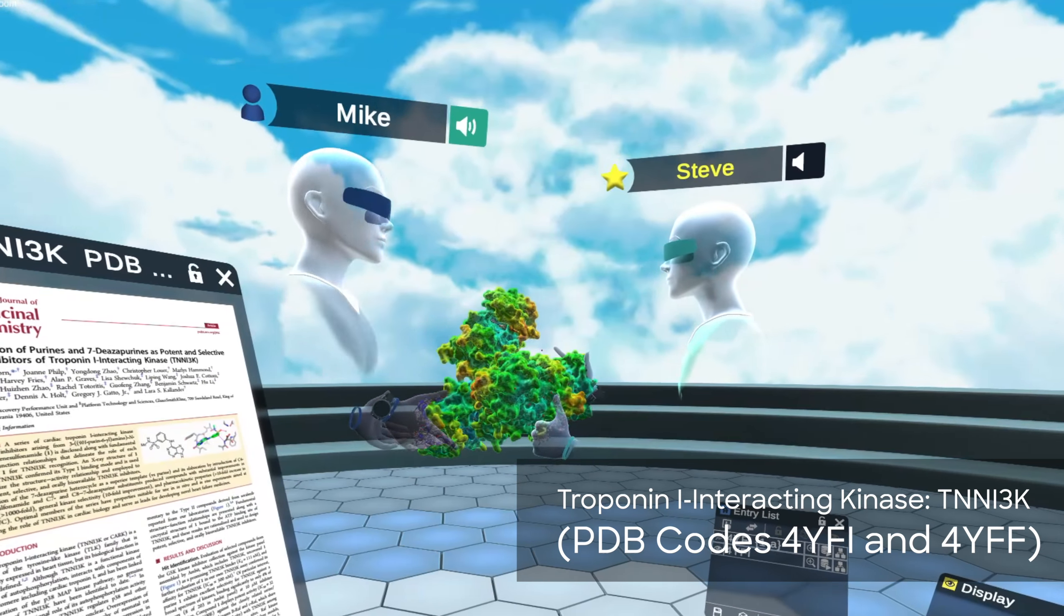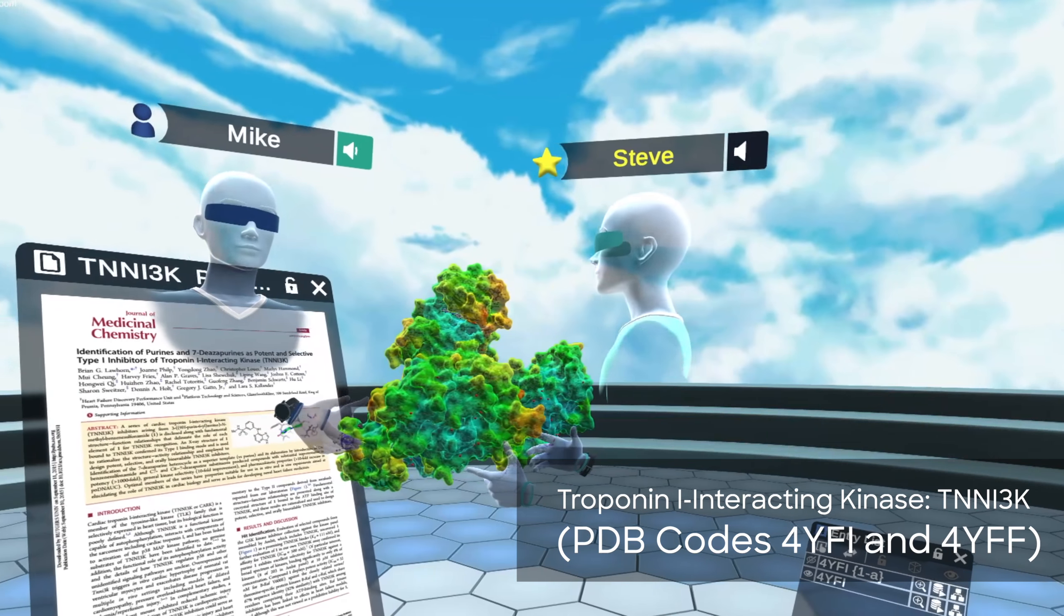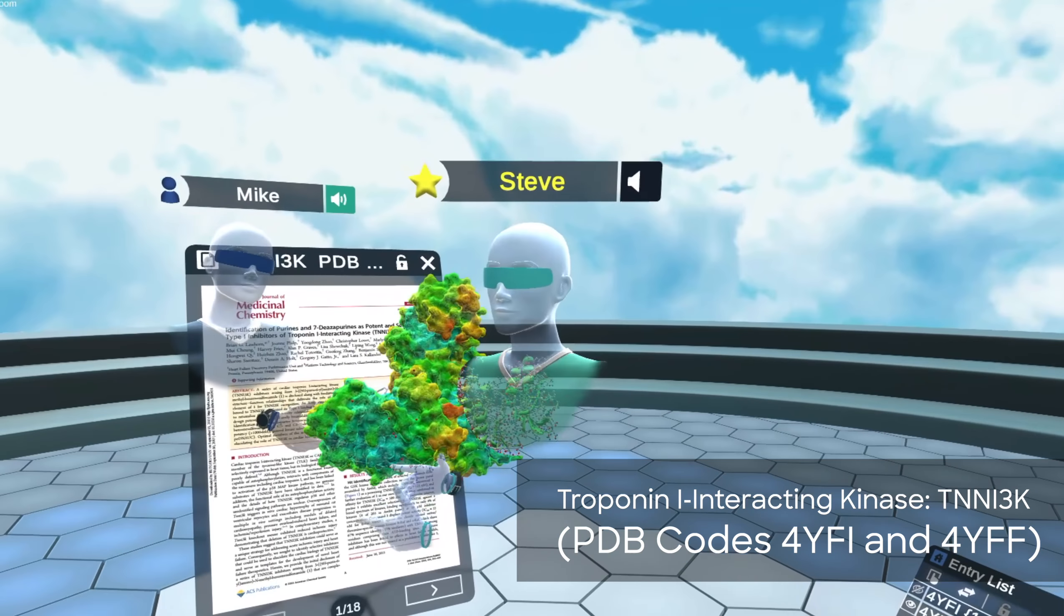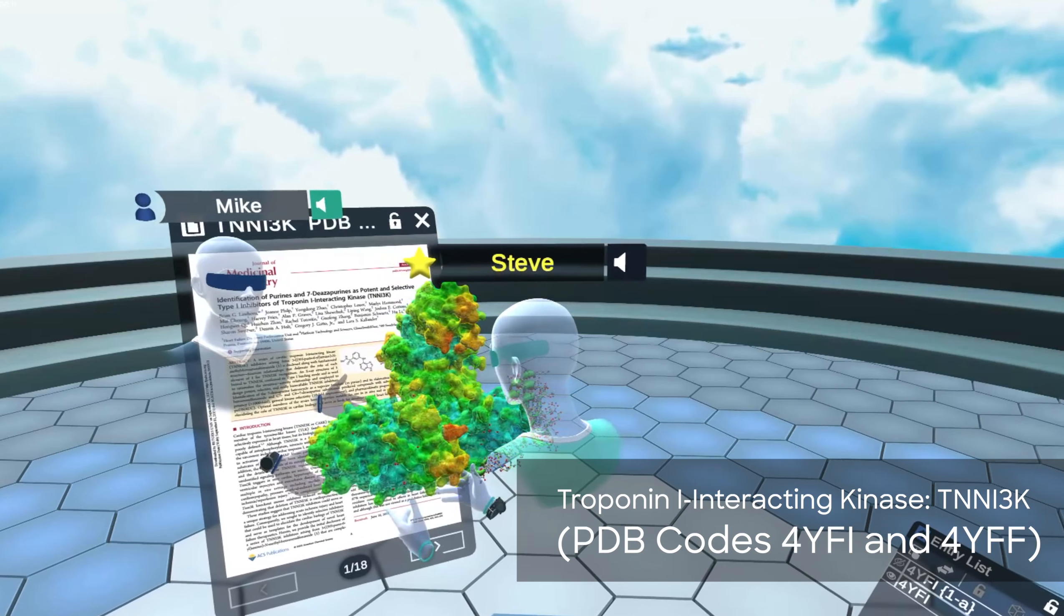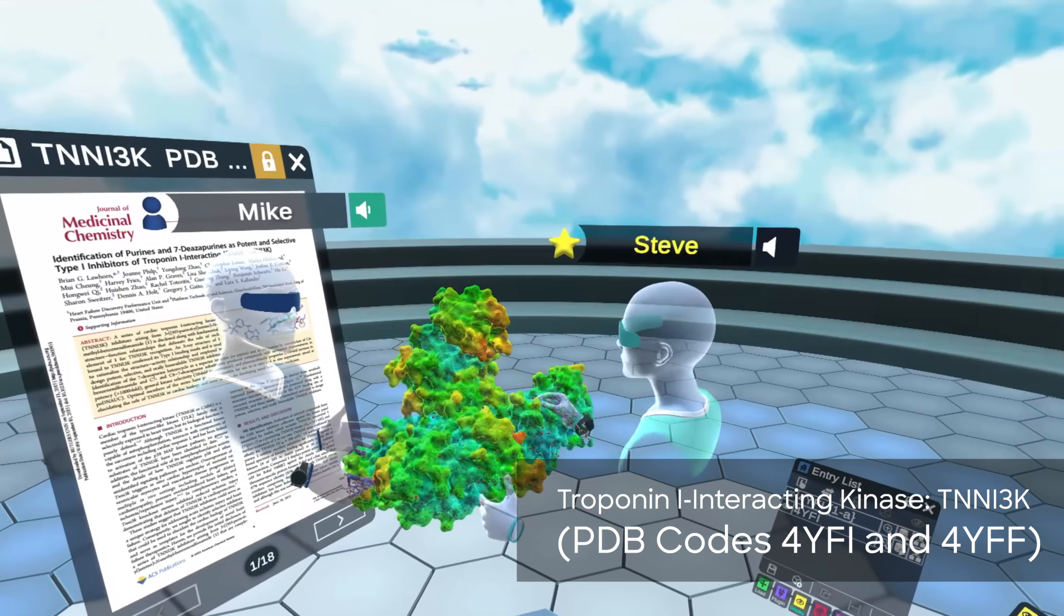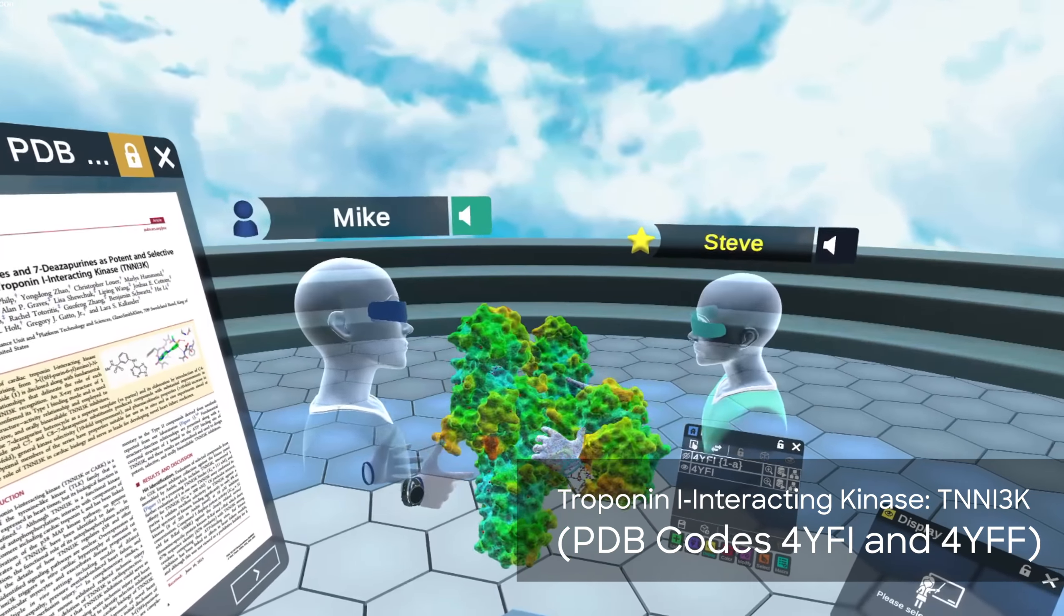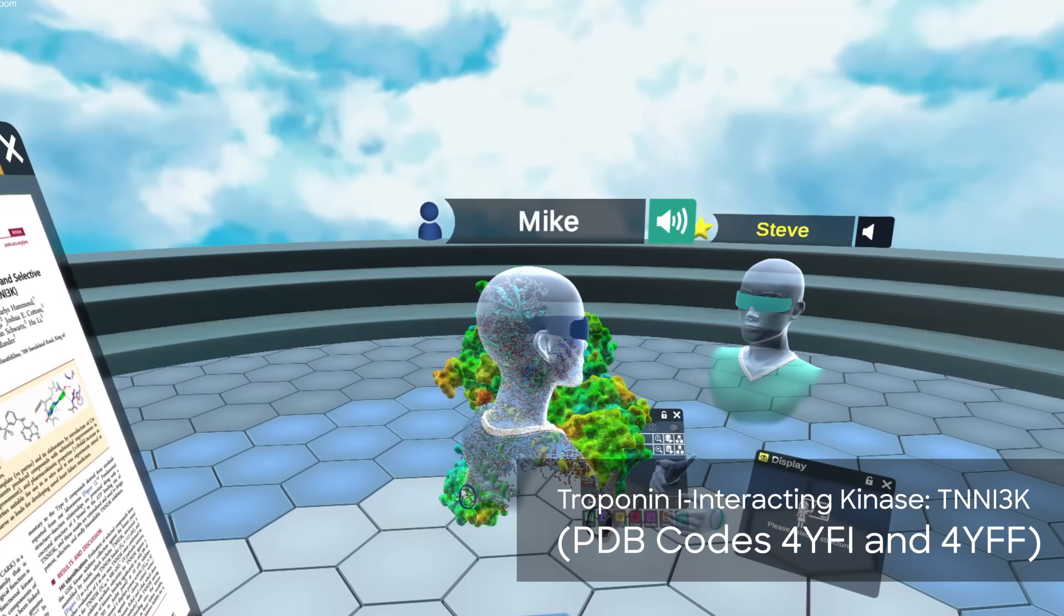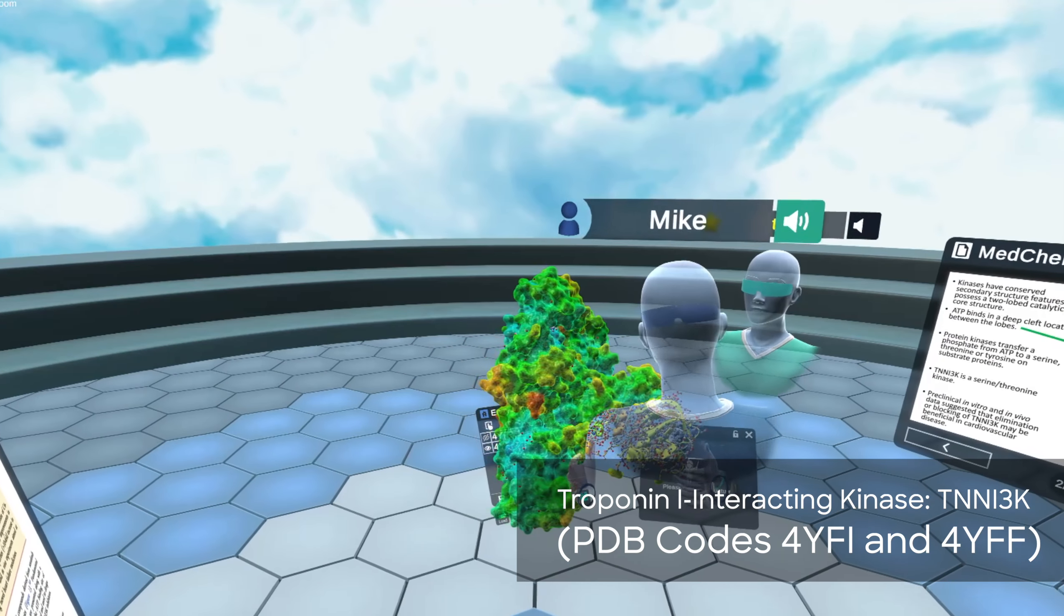So drug discovery scientists often use structure-based design when they're working with protein kinases because they're able to get nice x-ray crystal structures of the protein, including the protein with ligands bound. And so today we're going to look at a kinase called TNNI3K. This is a serine threonine kinase and what a kinase does is it binds ATP and then transfers a phosphate from ATP to a serine or a threonine or a tyrosine, depending on what kind of kinase it is, and that changes the signaling or function of the protein substrate.